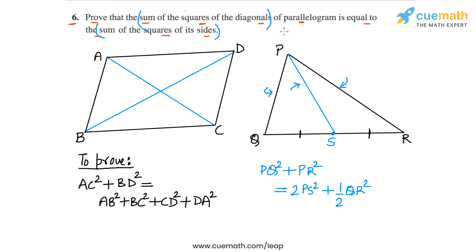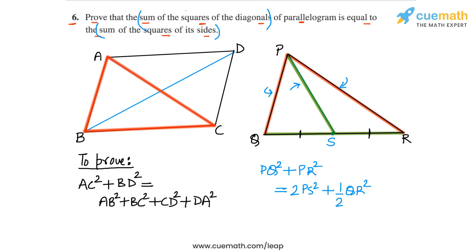Let me repeat this result once more: if we take PQ² + PR², we get twice the square of the median PS plus half the square of the opposite side QR. This is the result we are going to use. We will apply it to four triangles in the parallelogram figure: triangle ABD, triangle ABC, triangle BCD, and triangle ACD.